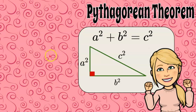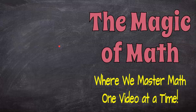There you have it. That is how you prove the Pythagorean theorem, how you use the Pythagorean theorem, and how to find a missing side of a right triangle. Thanks for joining me today at the Magic of Math, where we continue to master math one video at a time. Have a great day!